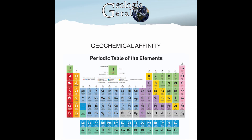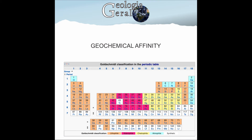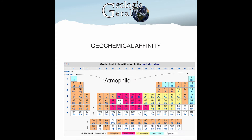This affinity was first determined by Goldschmidt, who observed the elements of the periodic table and individualized them into four main groups: lithophiles, siderophiles, chalcophiles, and atmophiles.